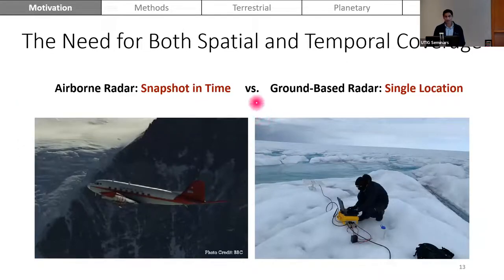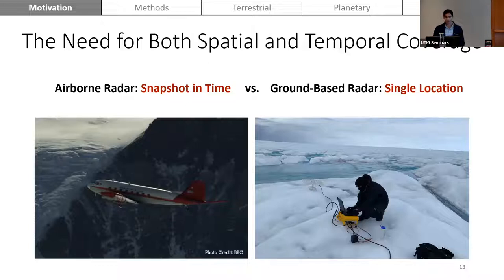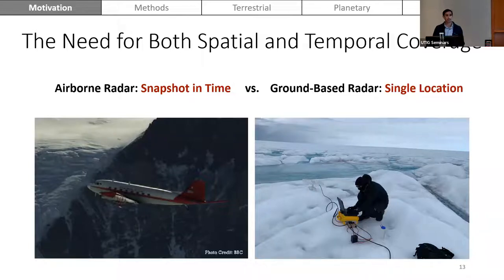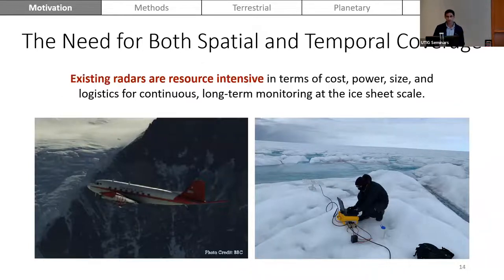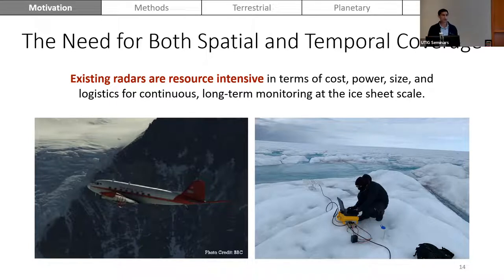Airborne radar sounding provides extensive spatial coverage but is limited temporally to a snapshot in time. Ground-based radar systems provide nearly continuous observations but only at a single location. In both cases, these existing radars are resource-intensive in terms of cost, power, size, and logistics for continuous long-term monitoring at the ice sheet scale. In both cases, they are fundamentally limited by the need to transmit their own powerful electromagnetic signal.